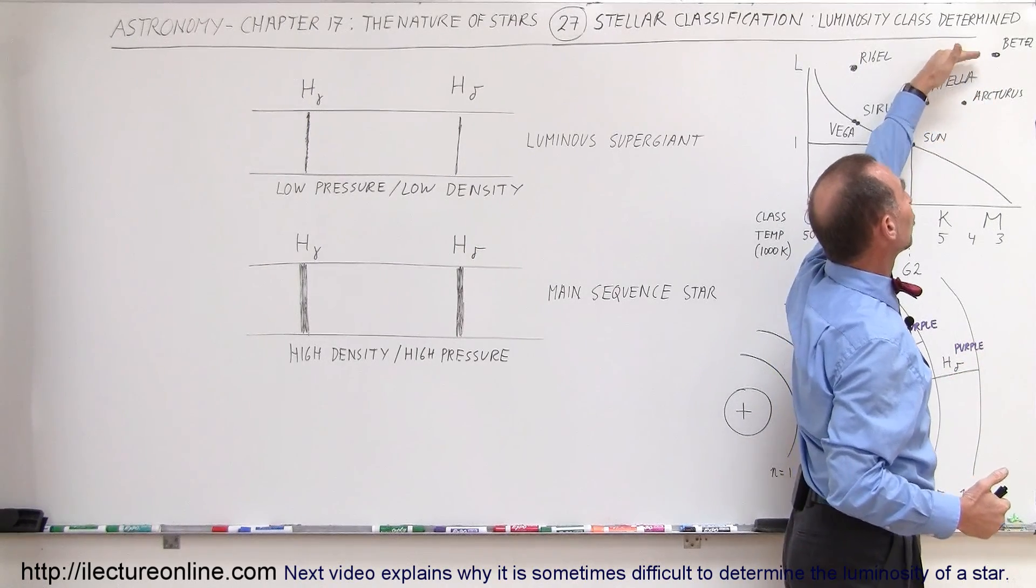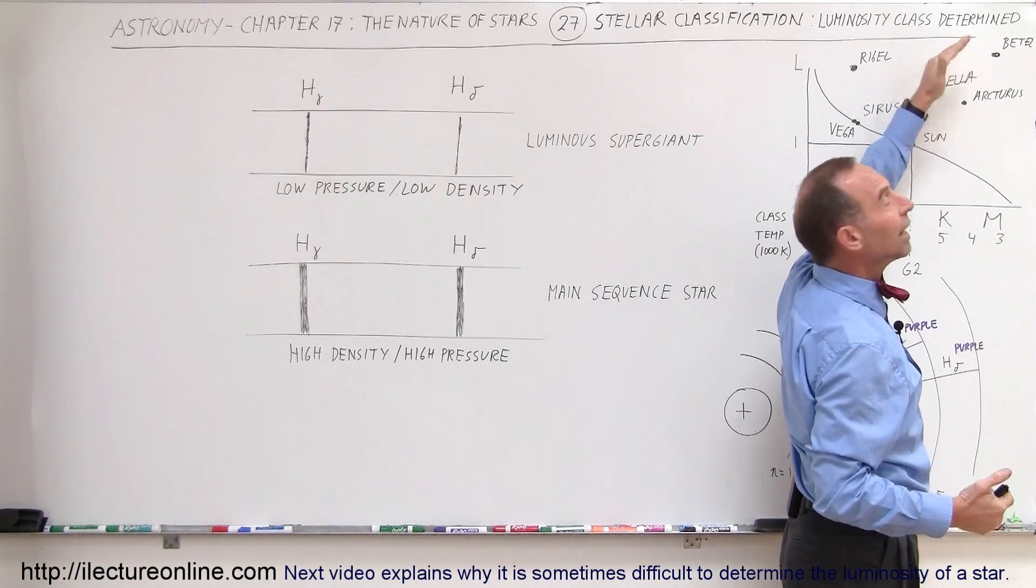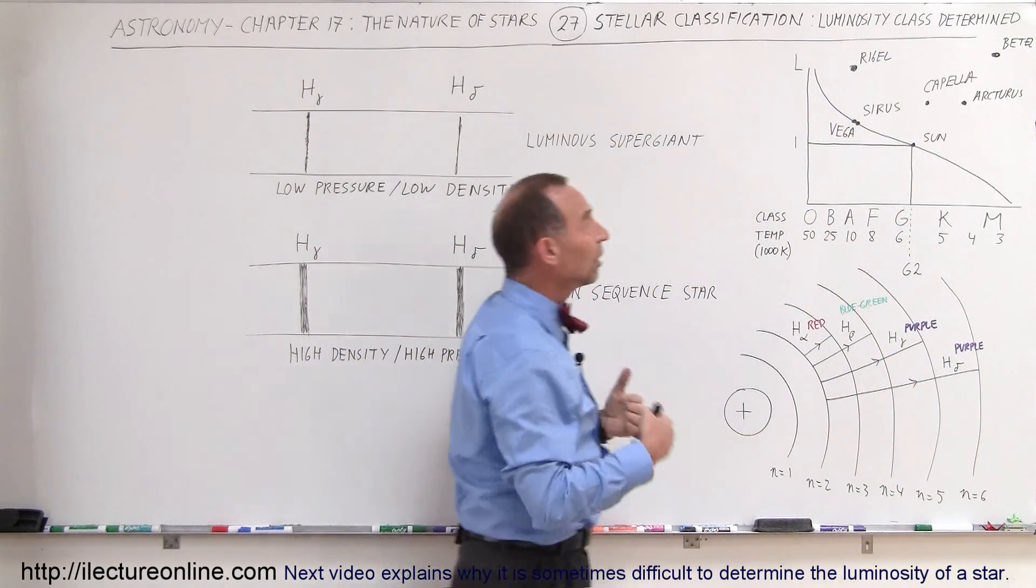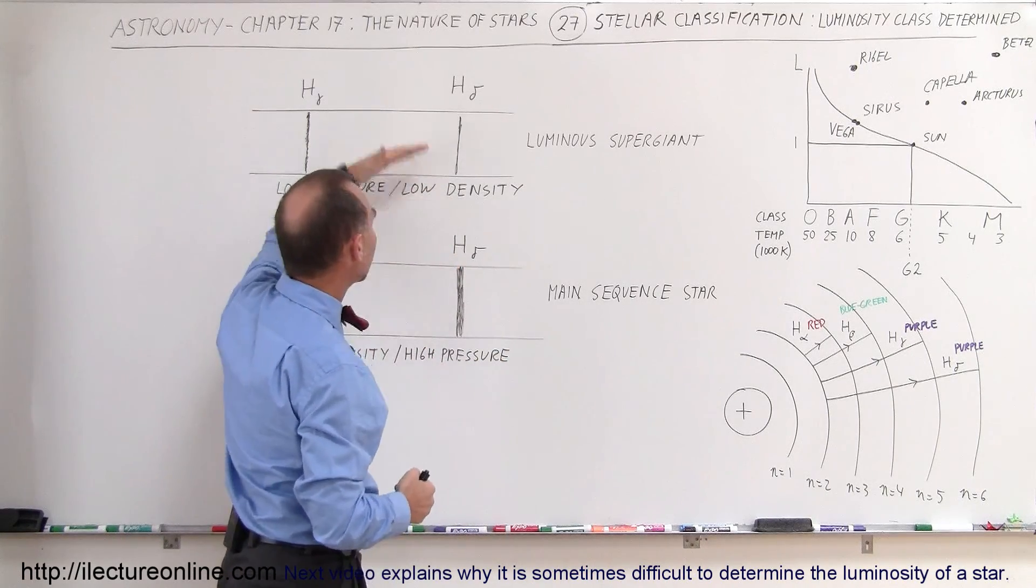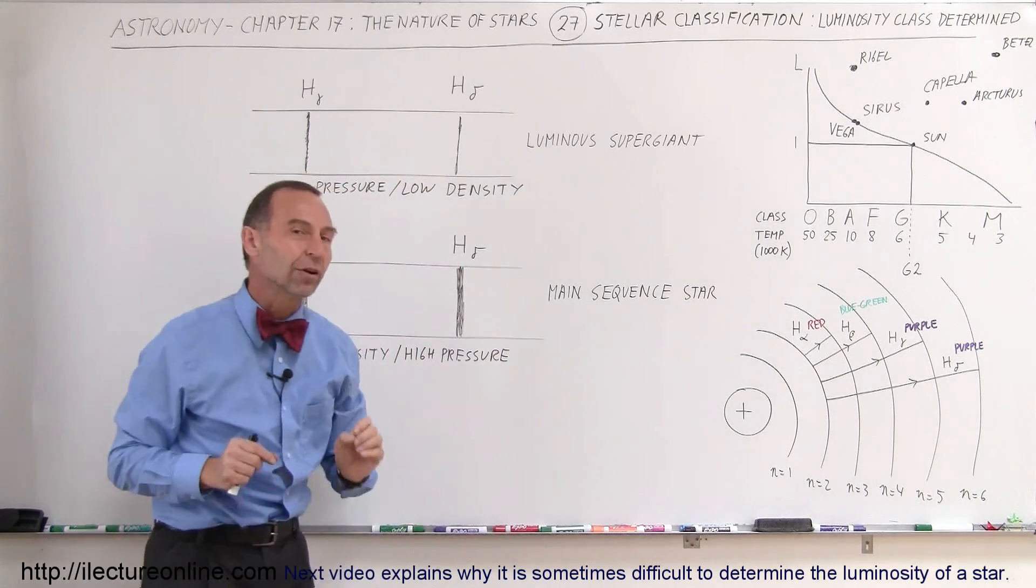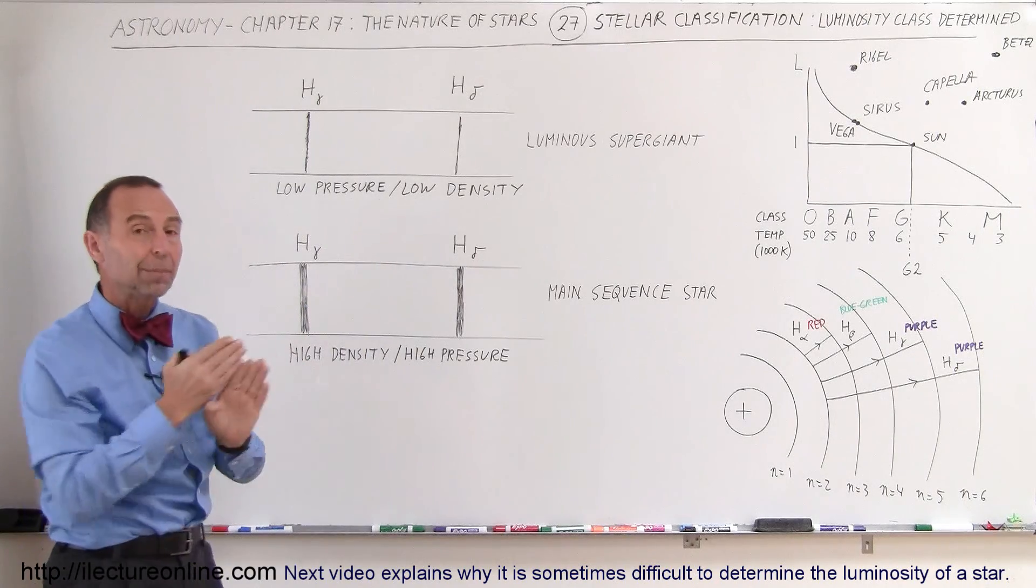And then the very luminous or luminous supergiants, class 1a and class 1b. And so therefore, we can subdivide that into those various luminosity classes, just simply by looking at the spectrum and seeing how pronounced those various lines are for stars of that particular color.